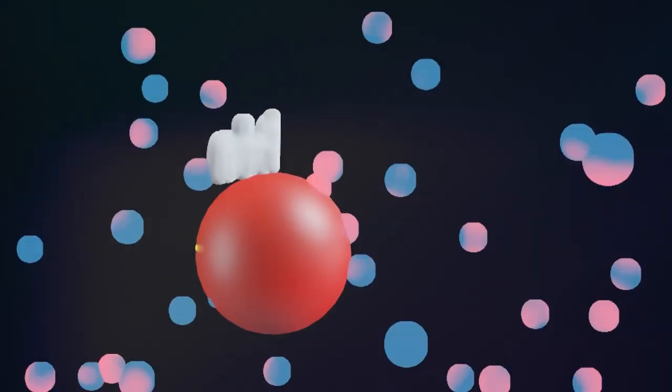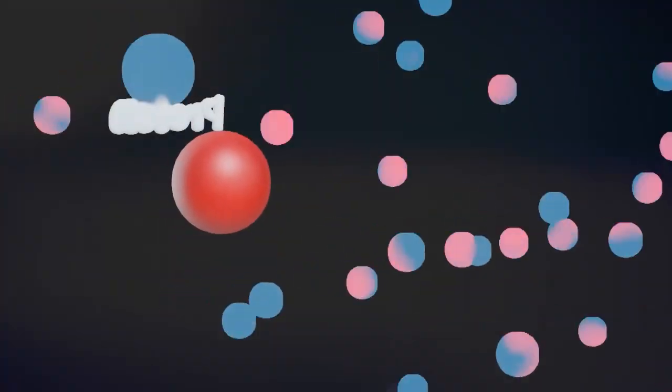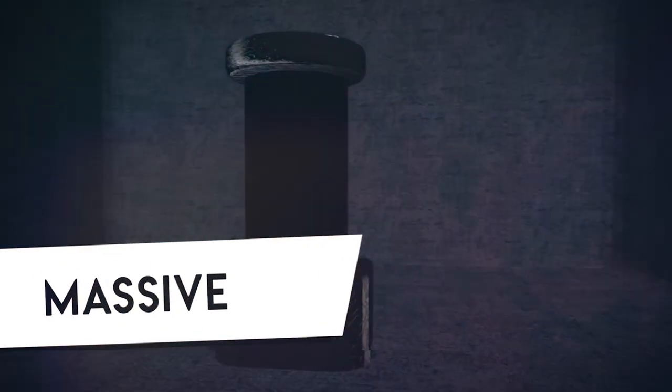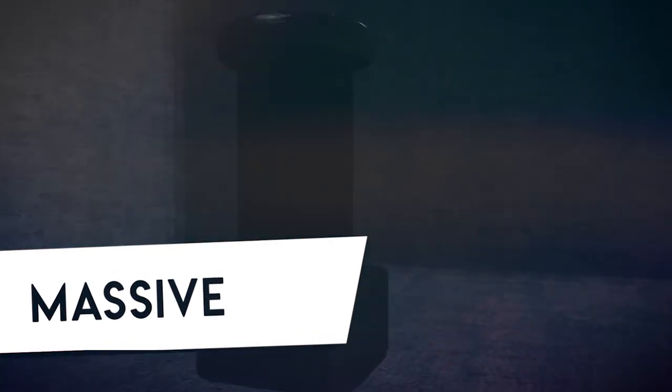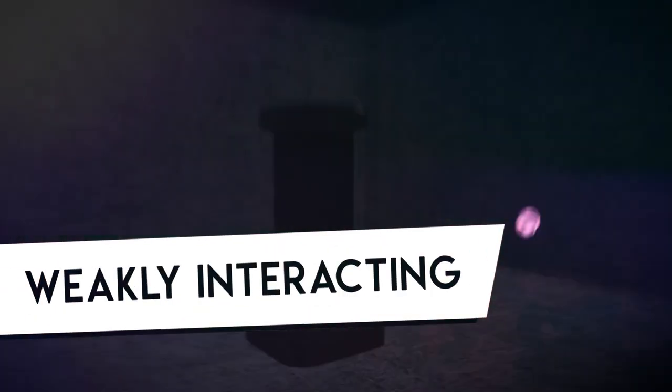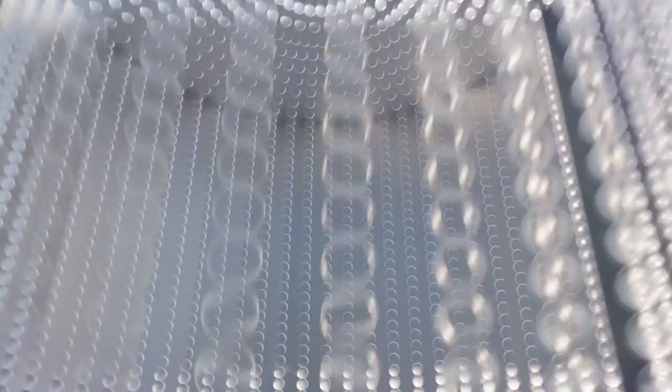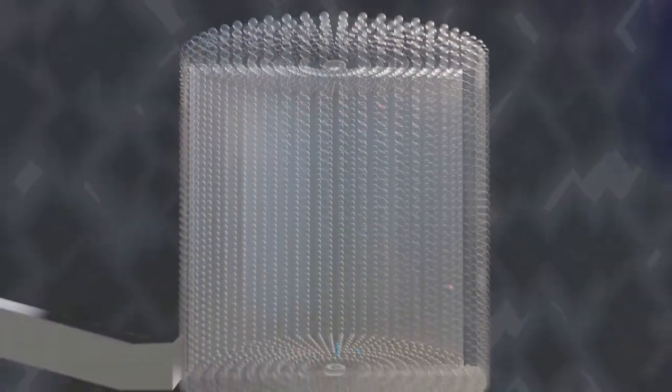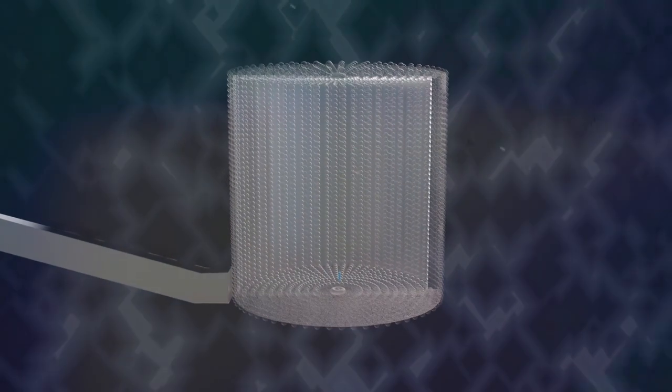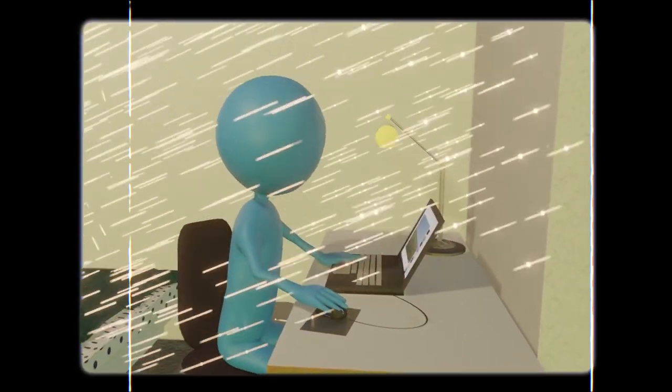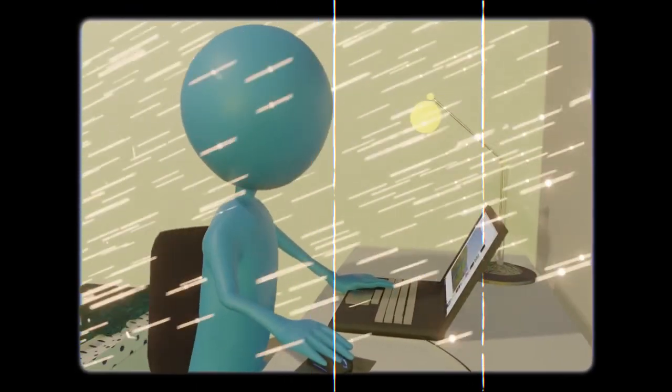Now, weakly interacting massive particles might sound like a mouthful, but let's break it down. Massive just means they've got some weight to them. They aren't ghost-like apparitions. And they are weakly interacting because they're a bit shy and seldom mingle with regulars. Picture those mysterious particles, influencing the ball with their movements but rarely making contact. And billions of these particles might be waltzing right through you as we speak.